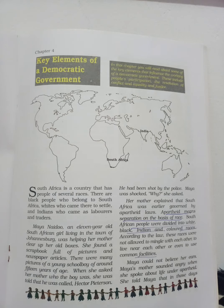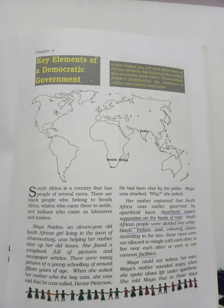These key elements include people's participation, resolution of conflict, and equality and justice. In the textbook, the first page has a story happening in South Africa. South Africa is a country that has people of several races. There are black people who belong to South Africa, whites who came there to settle, and Indians who came as laborers and traders. The important feature of South Africa is that it has people of several different races.